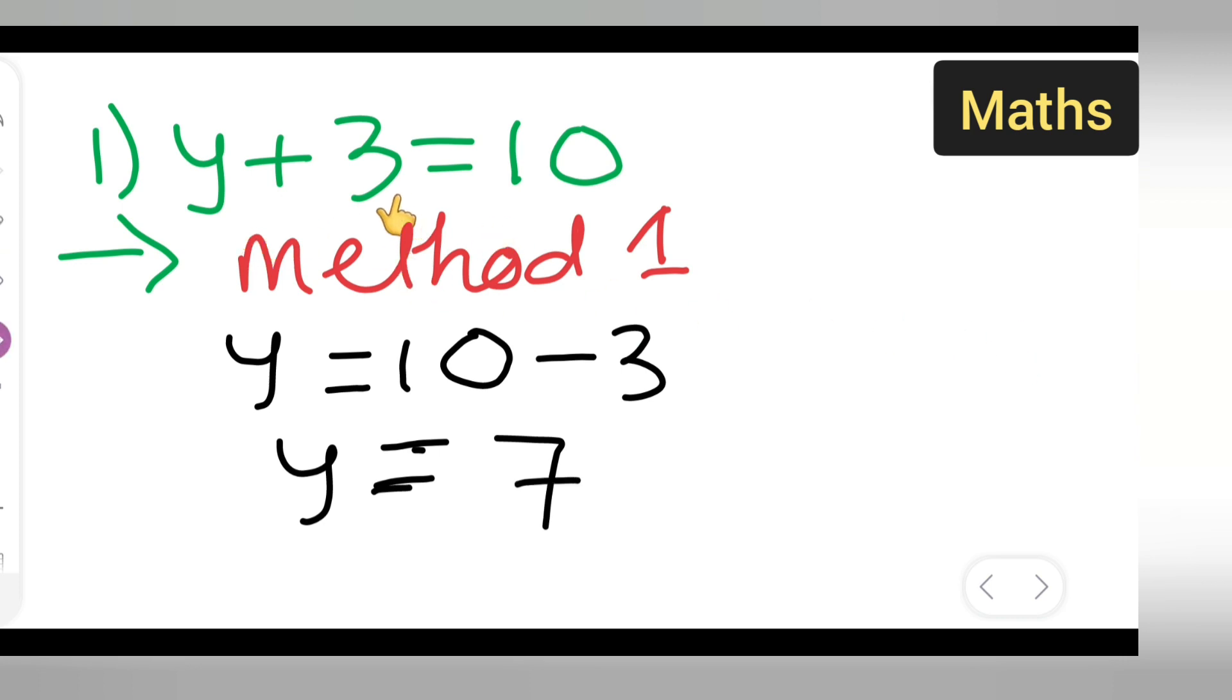So what I have done is I have taken this plus 3 to the other side, so it has become negative 3. So 10 minus 3 will give you 7.